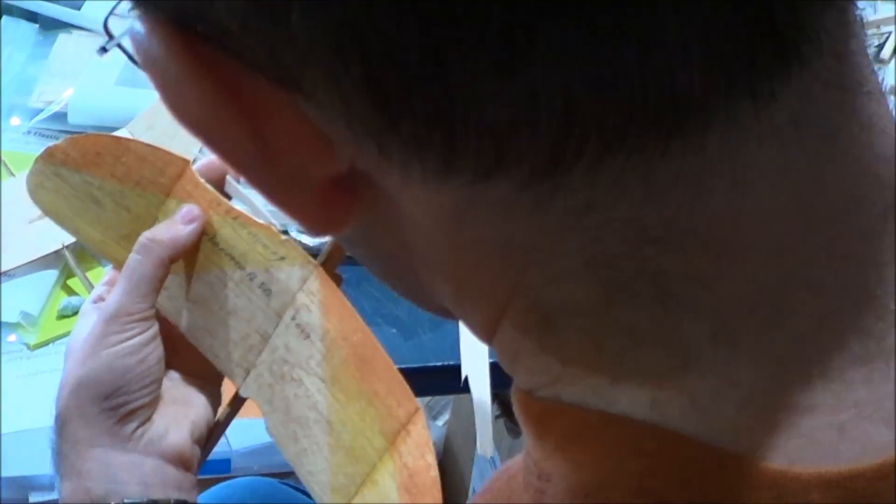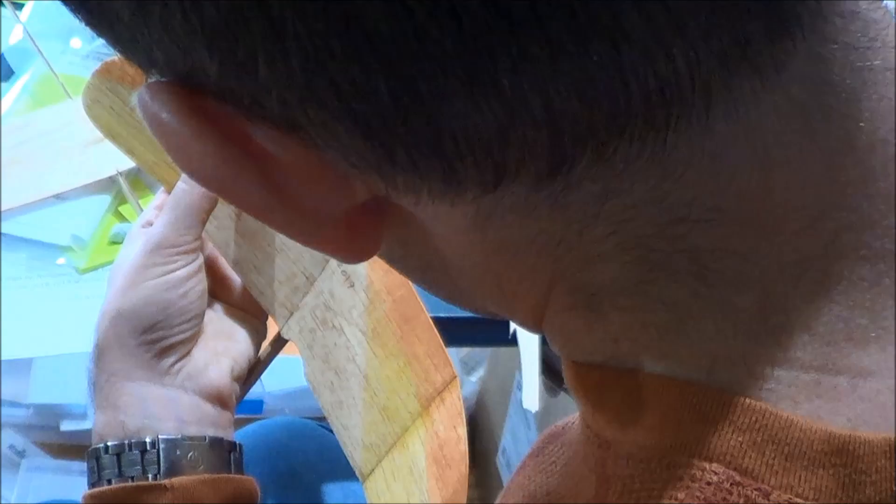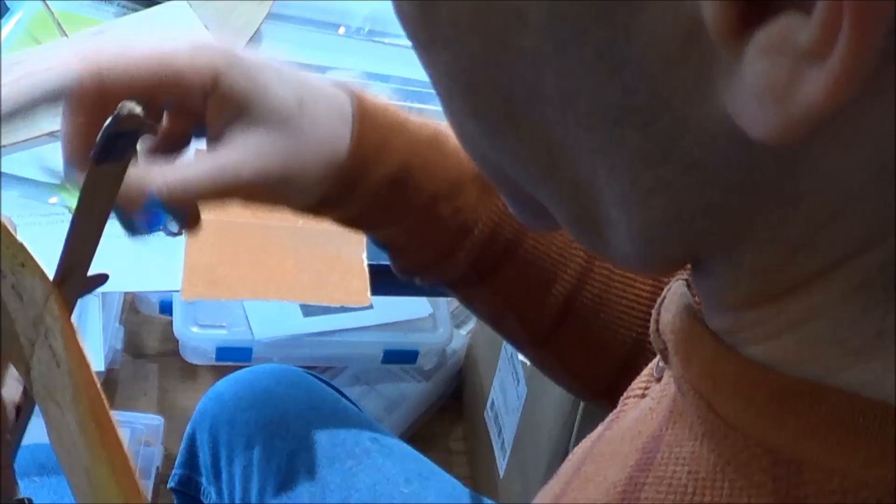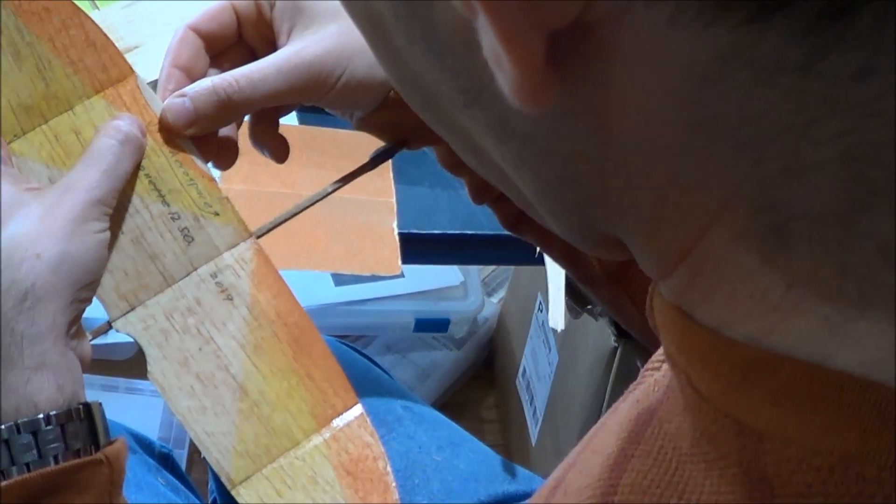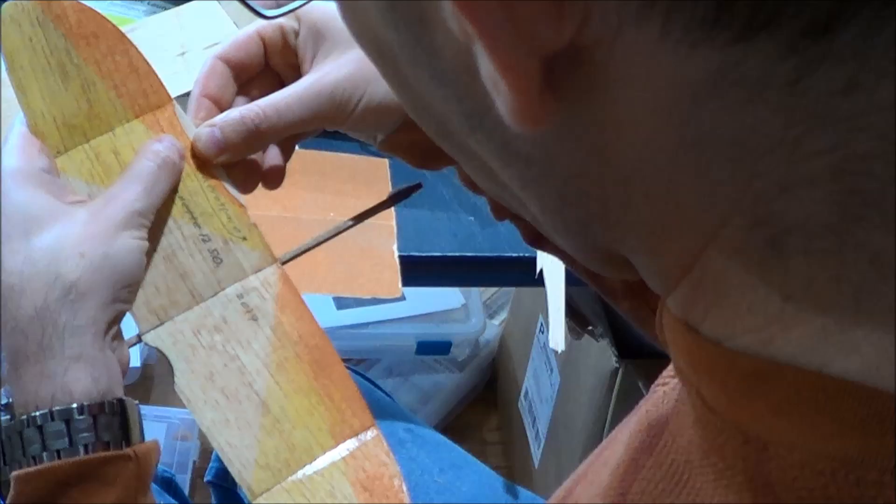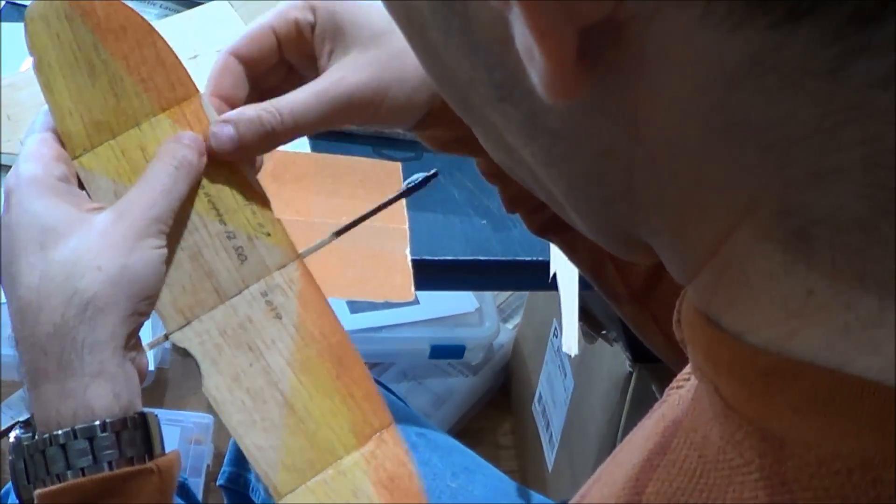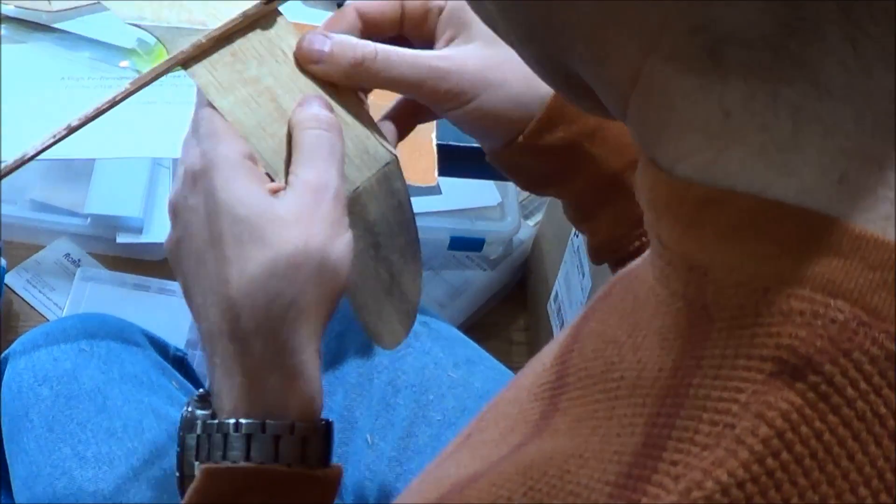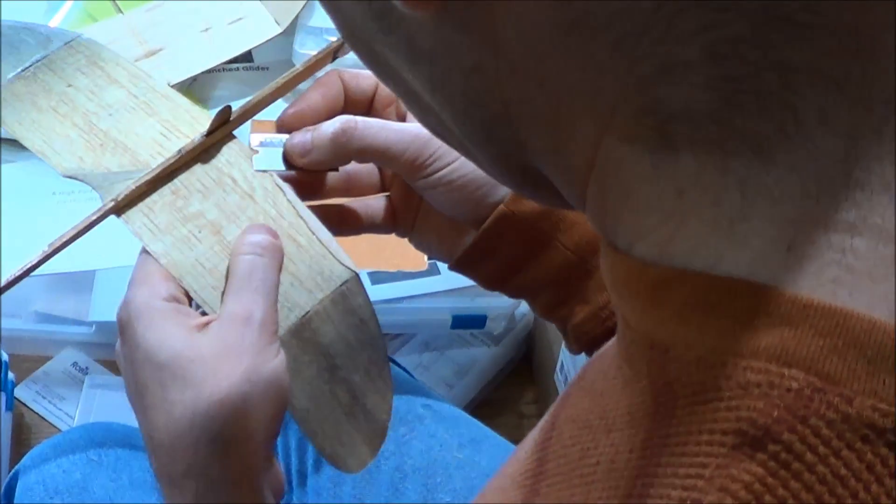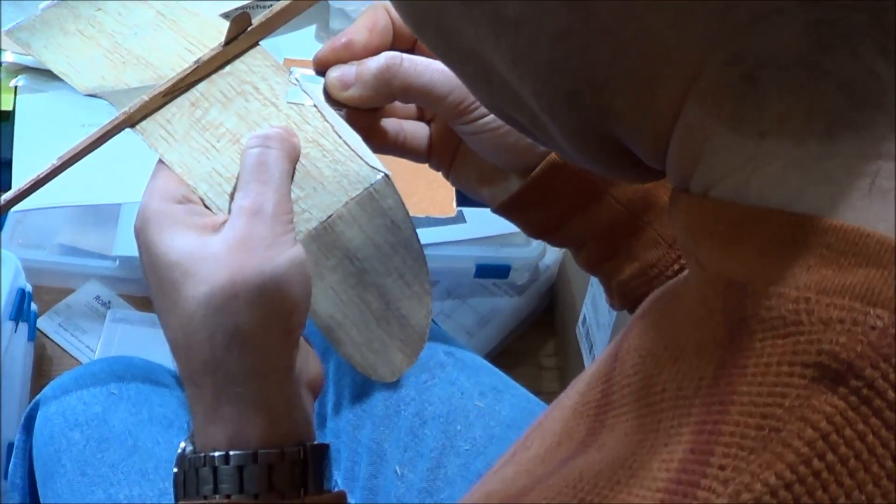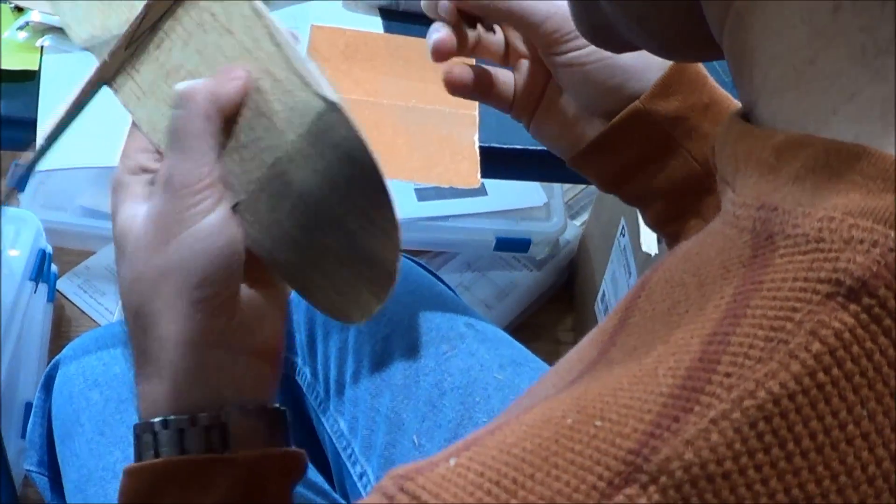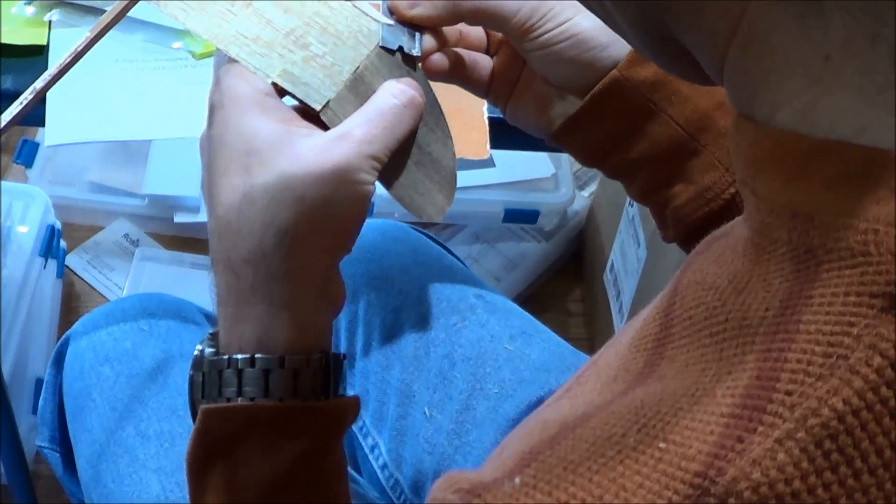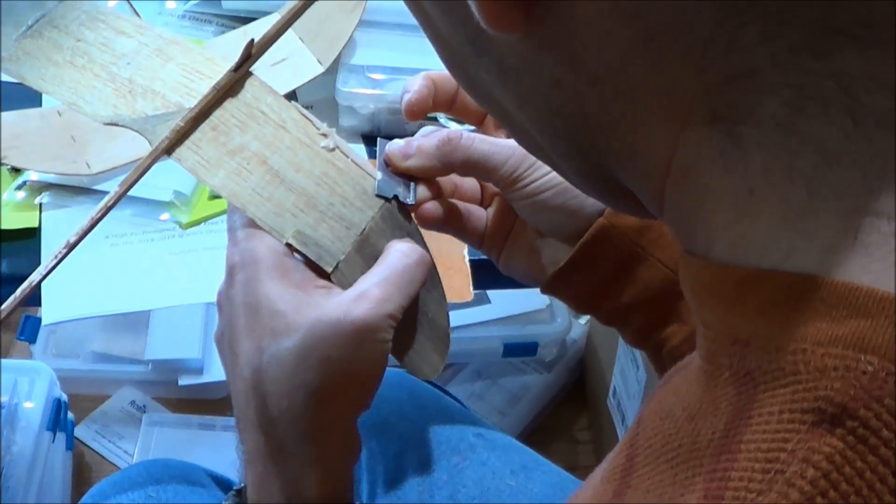So we're just going to take some CA, and this is a piece of 3/32nd. The wing is less than a 16th of an inch thick at this point in the airfoil, so this is greatly oversized. Then what I'm going to do is start attempting to whack this back. This grain is not straight in this scrap piece of wood.